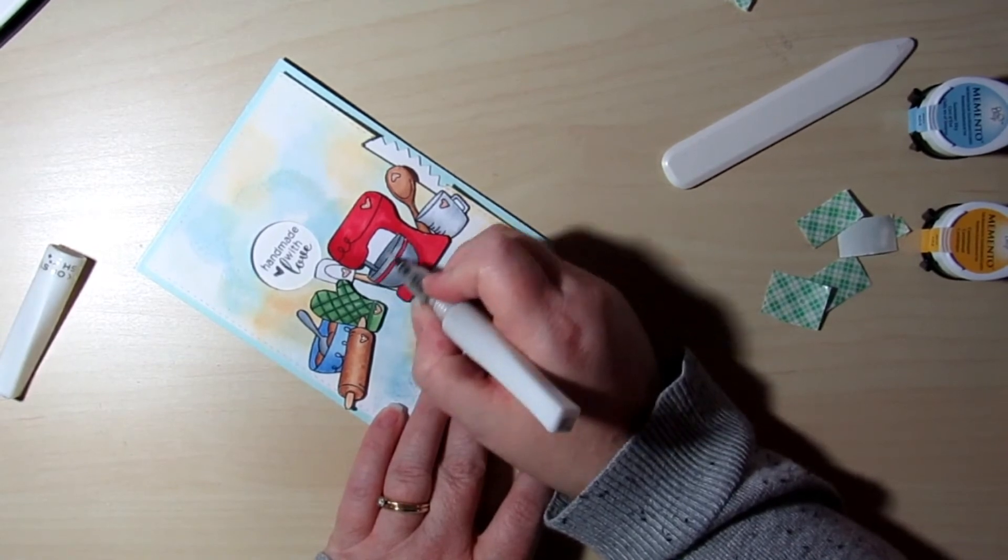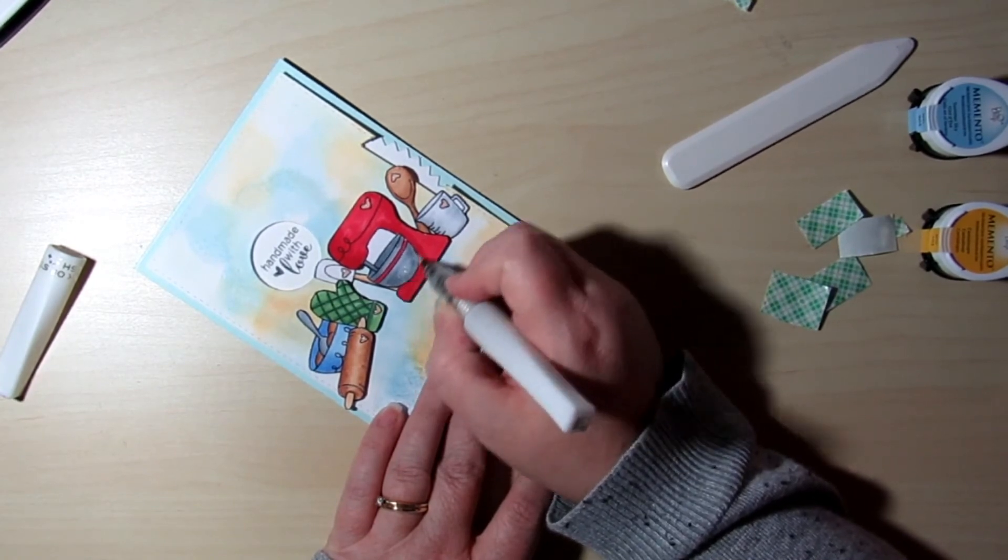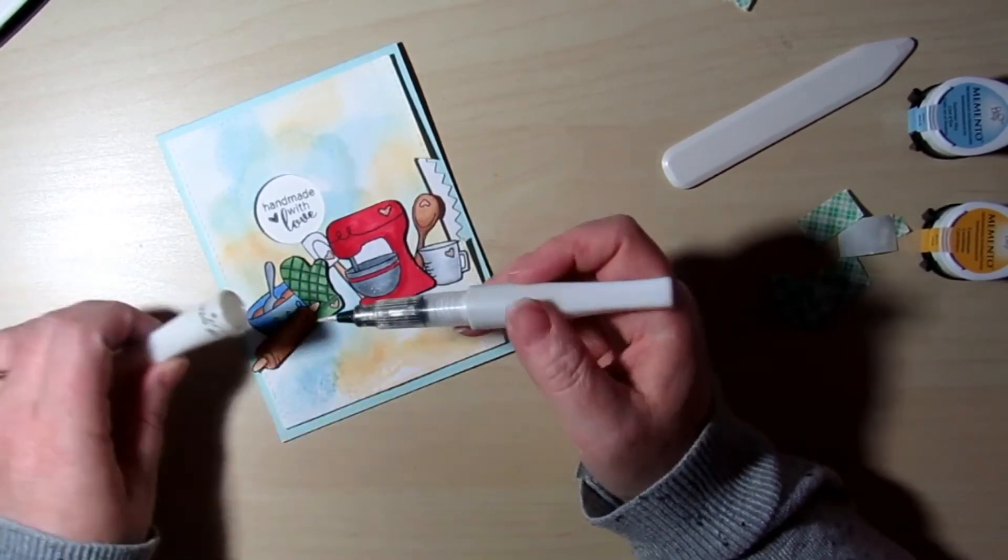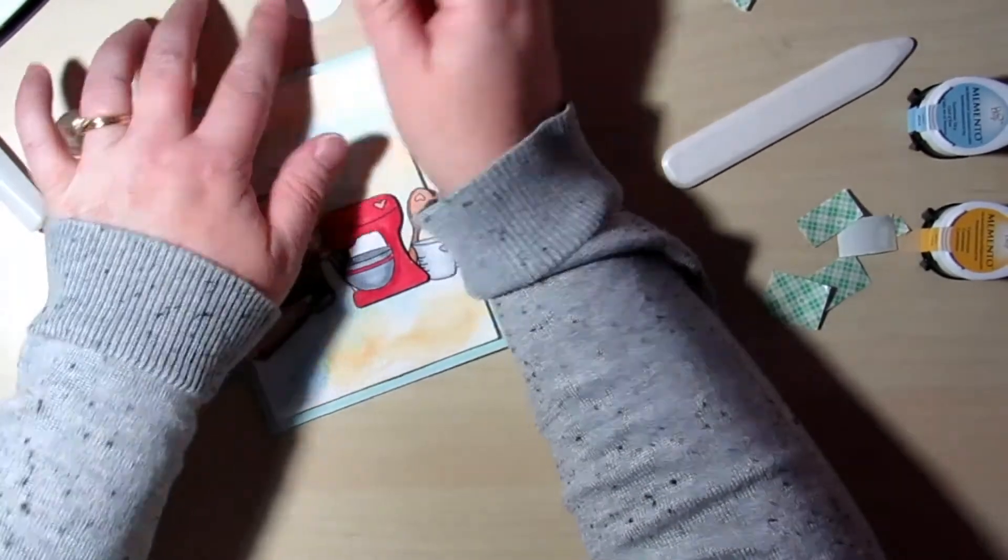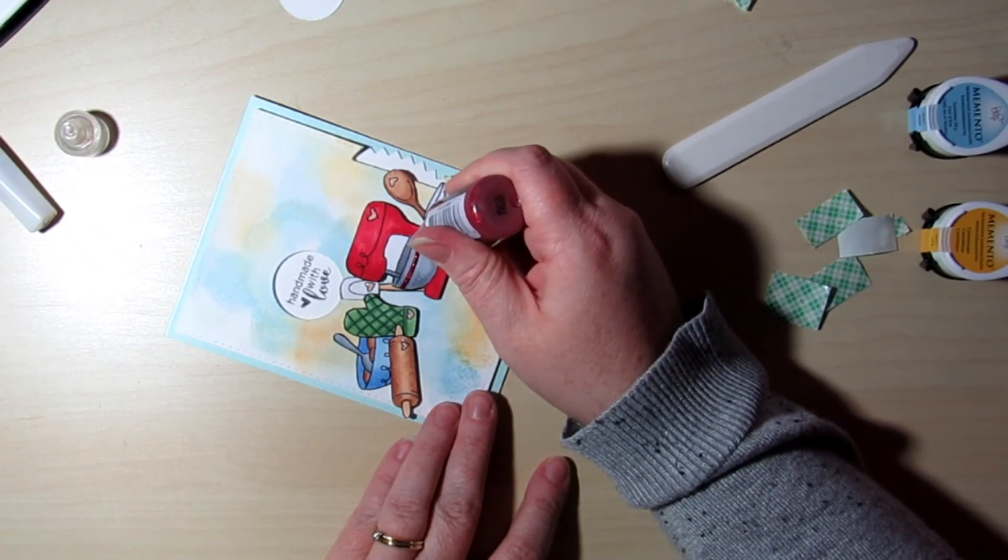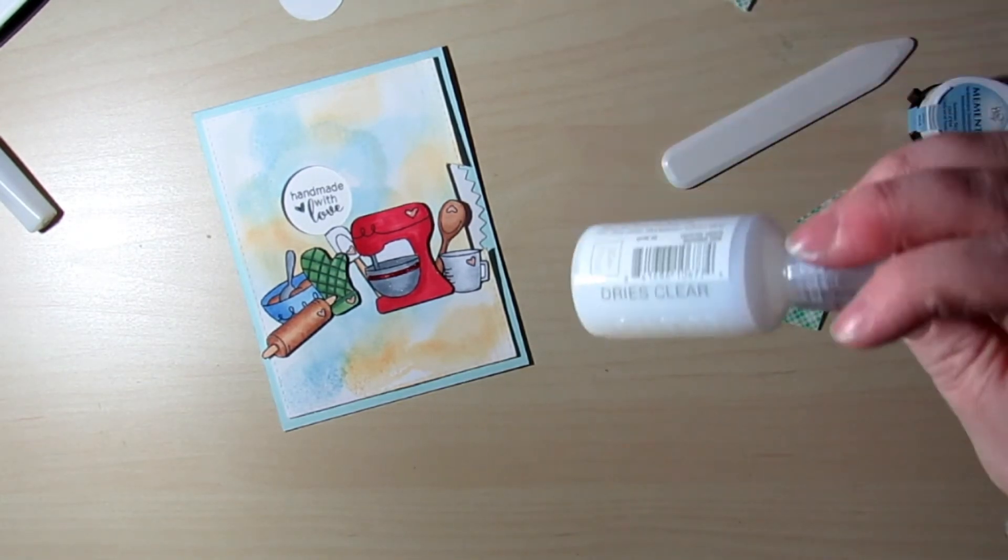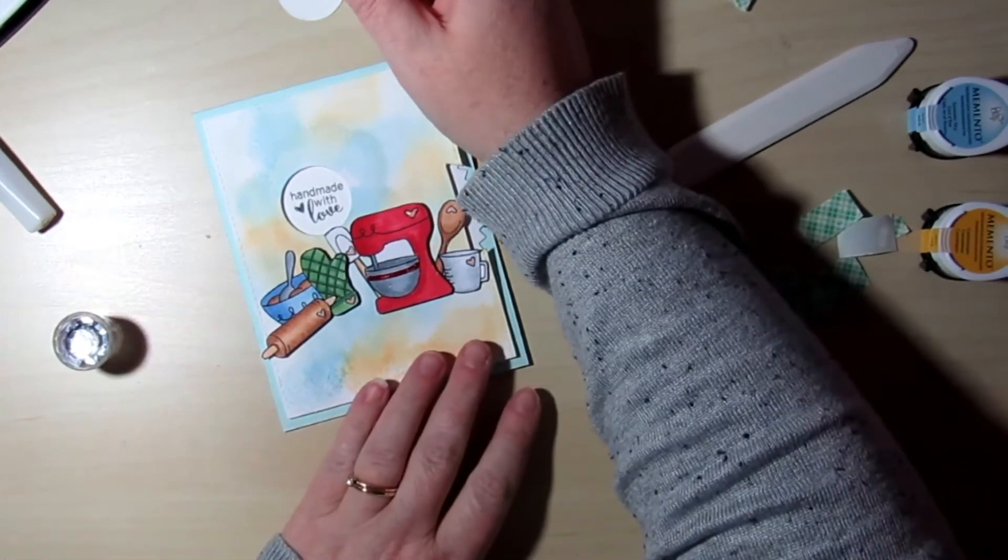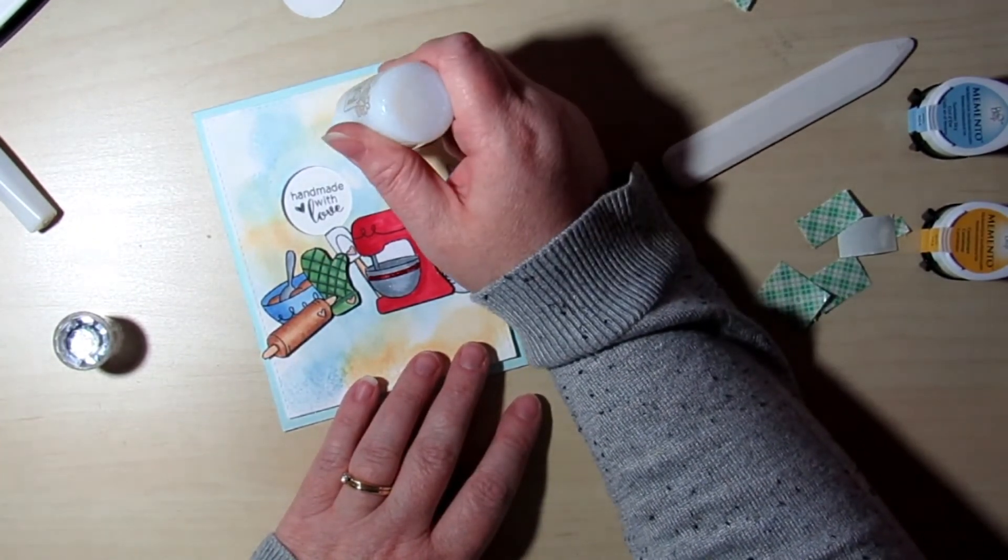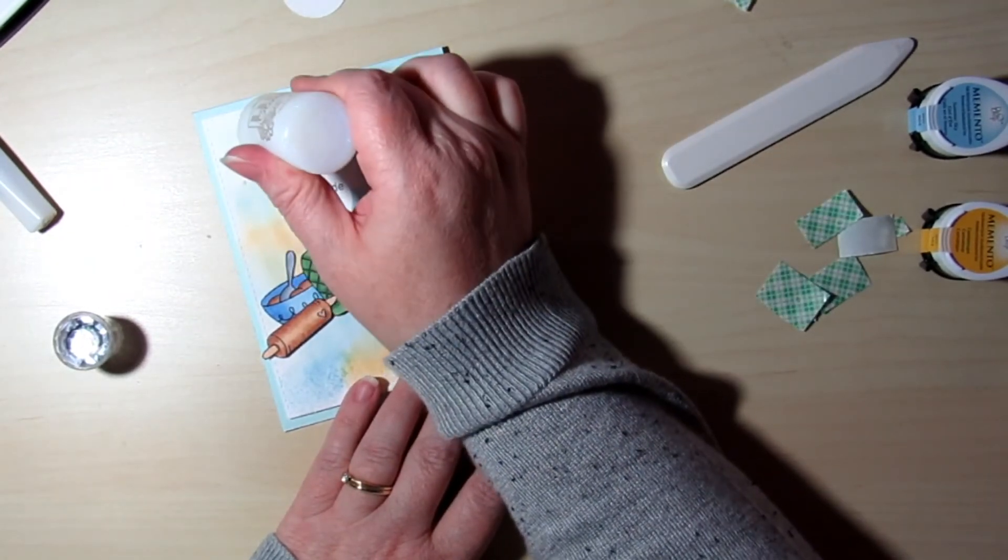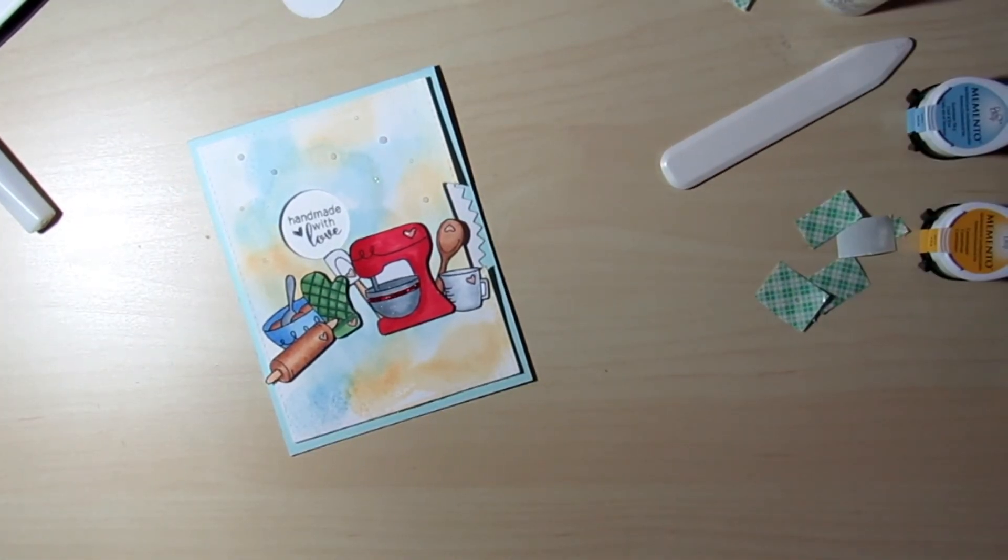I'm using some Wink of Stella on the mixing bowl, and I pretty much just leave it just on the mixing bowl. Then I'm grabbing these red Stickles to add to that bowl where the red line is. And I'm also grabbing some Nuvo glitter drops. These ones are called White Blizzard. And then I'm just making just some dots of various sizes on the upper half of the card.